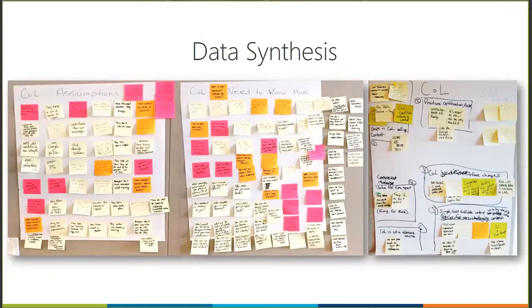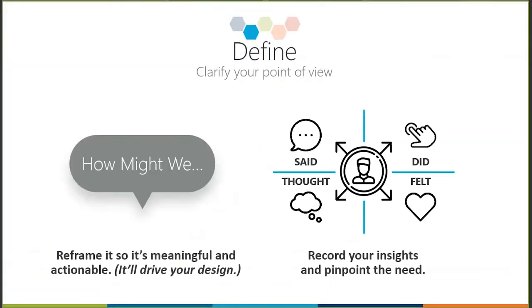There are a couple of tools that help you in the define phase. First, to help clarify your point of view, one tool that we tend to use in design thinking is 'how might we.' Rather than just using a blanket problem statement, we turn that problem statement into a 'how might we' question. The reason we do that is because when you reframe a problem as a 'how might we' question it makes it meaningful and actionable and it helps to drive your design. There is a specific reason why we use the three words 'how might we.' 'How' suggests that we do not yet have the answer — it helps us set aside our prescriptive beliefs and explore that there are a variety of different ways we may be able to solve this.